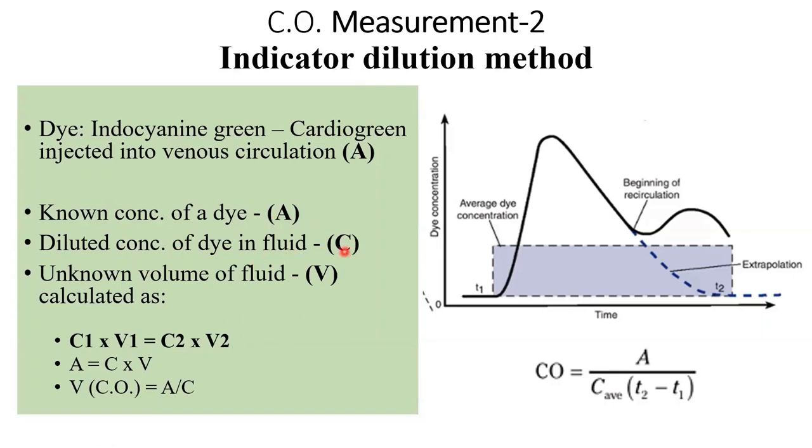What is the unknown? We want to know the volume of fluid in which the dye has been diluted, which will reflect the cardiac output and is denoted by V. At this point on the graph, we are injecting a known amount of cardiogreen.